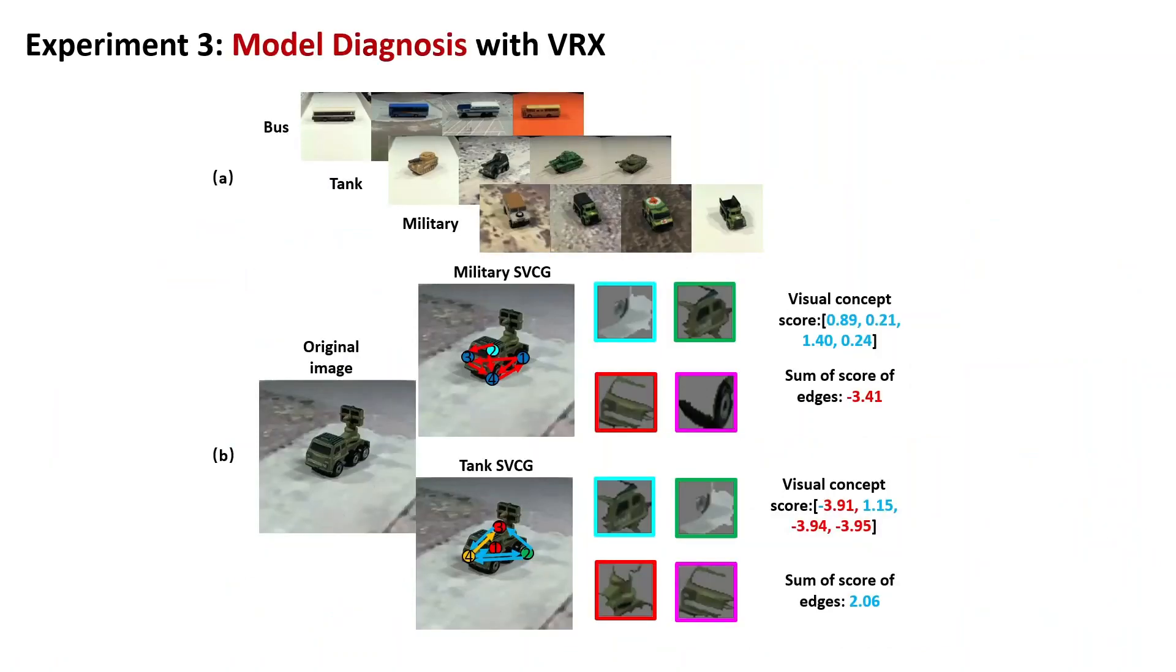The third experiment shows that VRX can diagnose the original model and guide improvement of performance. When we train the model with pose bias dataset, all bus in pose 1, all military in pose 2, and all tanks in pose 3, we have bad performance on test.